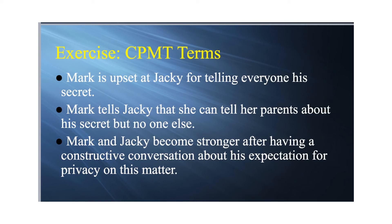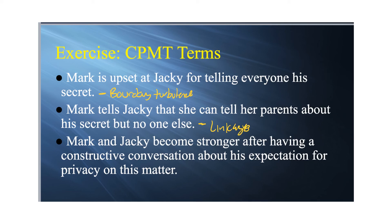Here's a quick exercise — pause the video and quiz yourself on which concept or aspect of privacy management each scenario refers to. Mark is upset at Jackie for telling everyone his secret — that's boundary turbulence, because he feels betrayed and hurt. Mark tells Jackie she can tell her parents but no one else — that's a linkage rule, about who she can tell. Mark and Jackie become stronger after a constructive conversation about his expectations — that's recalibration: you recalibrate the rules and the relationship.